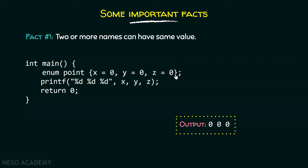It is not the case that we must always assign different values to names — we can assign the same values as well. We can also declare a variable of type enum point and assign it either x, y, or z. But we can also use these names directly without even declaring a variable of type enum point. Always remember that the main job of enum is to assign names to integral constants, and here we are just using these names.